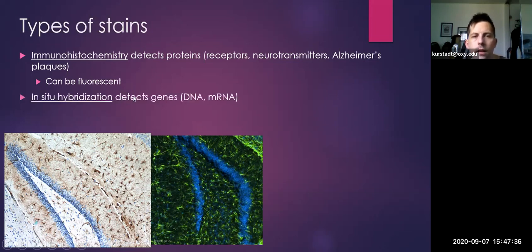We've got another technique that works similarly but targets something different, called in-situ hybridization or ISH for short. In this way, we could look at genes of neurons, whether we're looking at base DNA or precursors to the proteins they make - mRNAs.